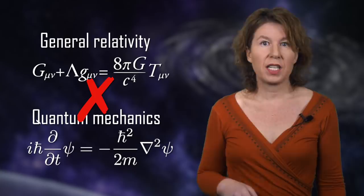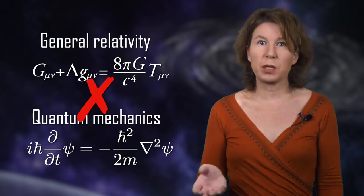The most important reason physicists think that general relativity must be wrong is that it doesn't work together with quantum mechanics. General relativity is not a quantum theory, it's instead a classical theory, as physicists say. It doesn't know anything about the Heisenberg uncertainty principle or about particles that can be in two places at the same time and that kind of thing.